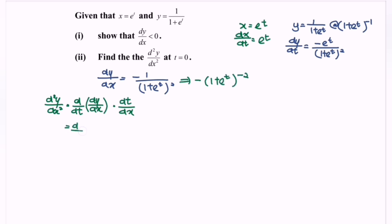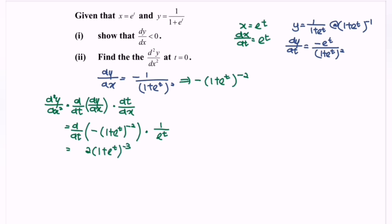If we differentiate dy/dx, where we have negative bracket 1 plus e to the power of t to the power of negative 2, multiply with dt/dx where we have 1 over e to the power of t. Kindly focus on the internal function. Differentiate the situation and we will have 2 bracket 1 plus e to the power of t to the power of negative 3. Differentiate the internal function and we will have e to the power of t multiply with 1, then multiply with 1 over e to the power of t.